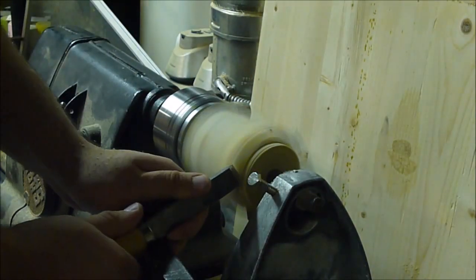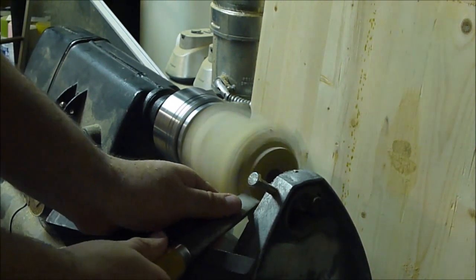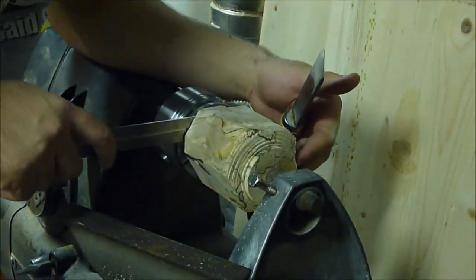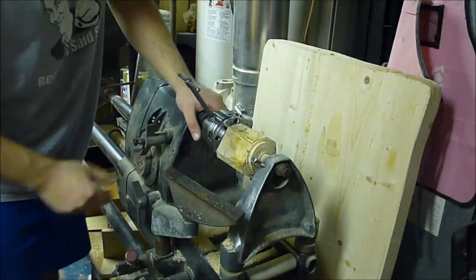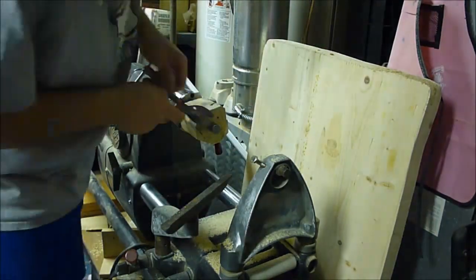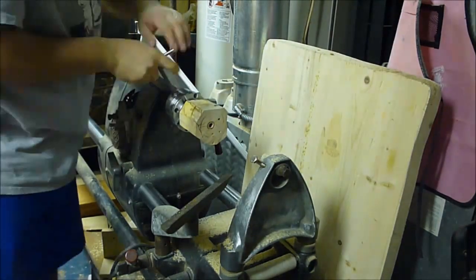I worked the end of the piece until I could turn down the tenon to the proper diameter. Once the tenon was cut to the proper diameter, I flipped it around and secured it into the dovetail jaws and removed the woodworm screw.